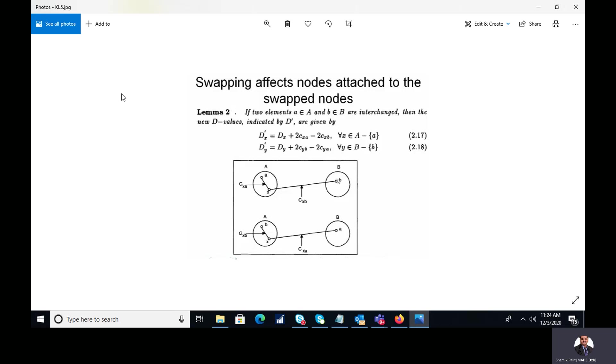So from that we can say that this particular node has both the internal cost as well as an external cost. And now what exactly we will do? We will interchange the position of A and B.